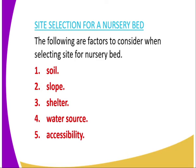The fourth factor is water source. You should site a nursery bed near a source of water, for instance near a river or a piping system so that you can get water easily. The fifth factor is accessibility. The nursery bed should be sited in a place which is easily accessible, especially at the middle of the farm, because the middle of the farm is very accessible.